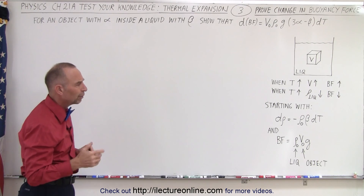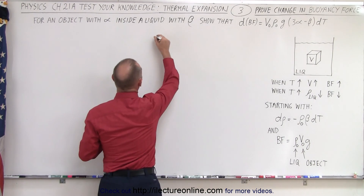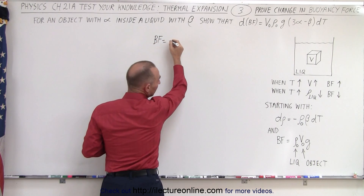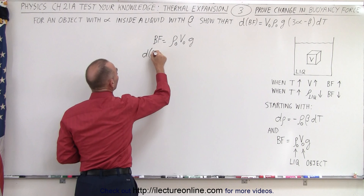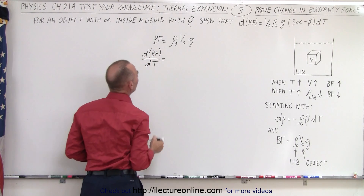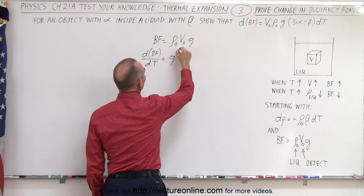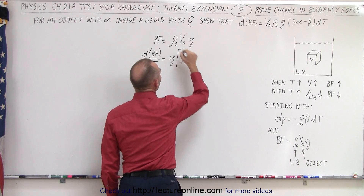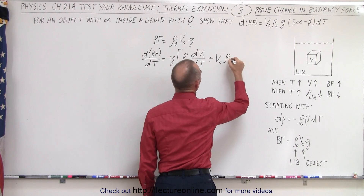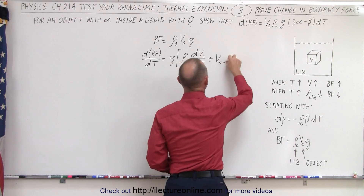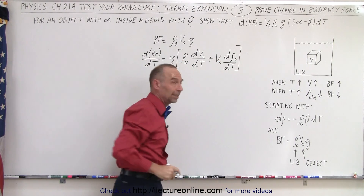So how do we prove that equation? Let's start with the buoyancy force and take the derivative of that buoyancy force with respect to the temperature. The buoyancy force is equal to the initial density times initial volume times G. The change in the buoyancy force with respect to the temperature — G is a constant so we can take that out — and we have two variables, so we use the product rule: the first times the derivative of the second with respect to temperature, plus the second times the derivative of the first with respect to temperature.